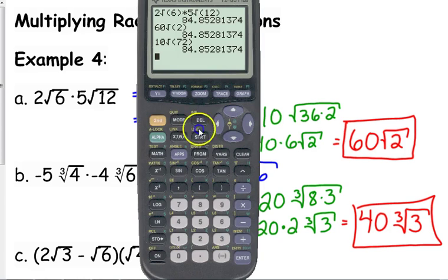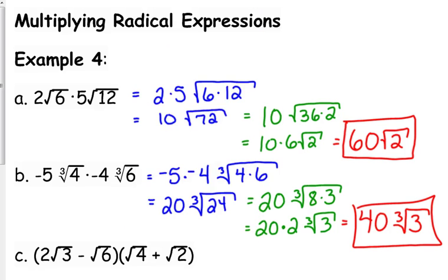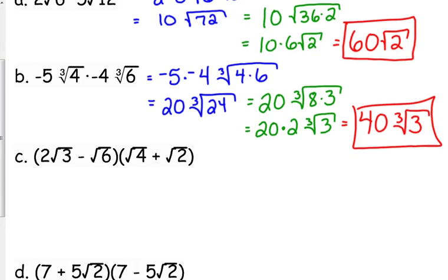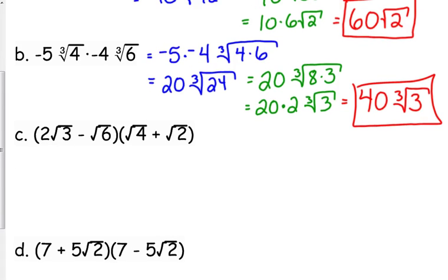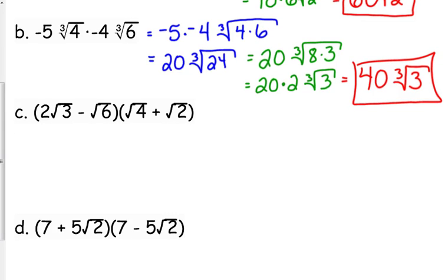And as a reminder, your cube root button is under your math menu. If you want to check that one, press math and it's number 4 is where your cube root is. Now that's just a single radical times a single radical. We can also multiply binomial expressions of these.